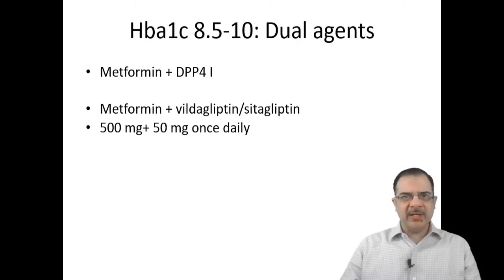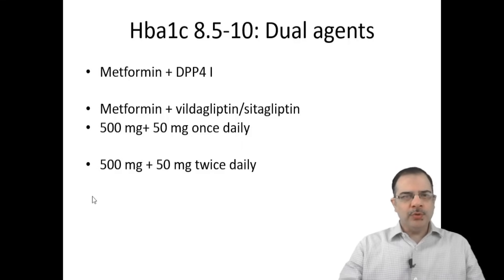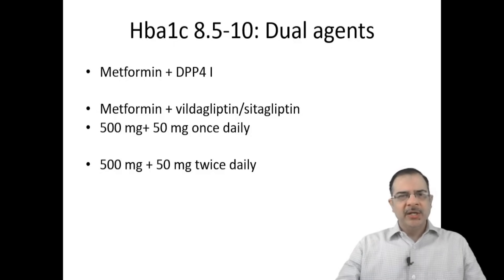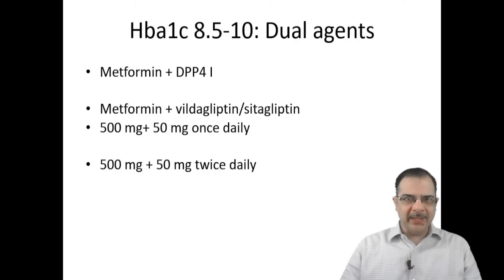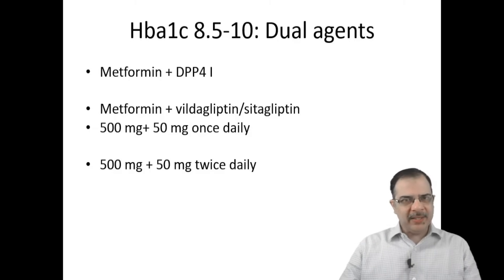If glycemic control is achieved, well and good. If sugars are still high, increase the dose of both agents: make metformin twice a day and Vildagliptin or Sitagliptin 50 mg twice a day. Vildagliptin and Sitagliptin also come in a 100 mg sustained-release formulation. So instead of 50 mg twice a day, you can give Vildagliptin 100 mg once a day or Sitagliptin 100 mg once a day along with metformin 500 mg twice daily. These drugs also come in fixed-dose combination formulations.